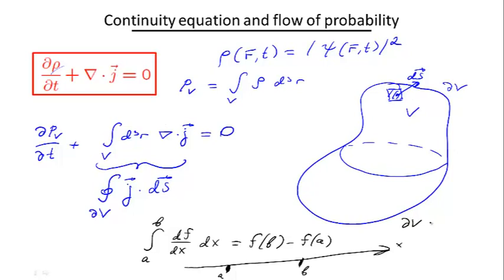So in some sense, this ∂V is similar to a and b, so the volume is similar to the segment between a and b, and the full derivative dF/dx is similar to the divergence of j.